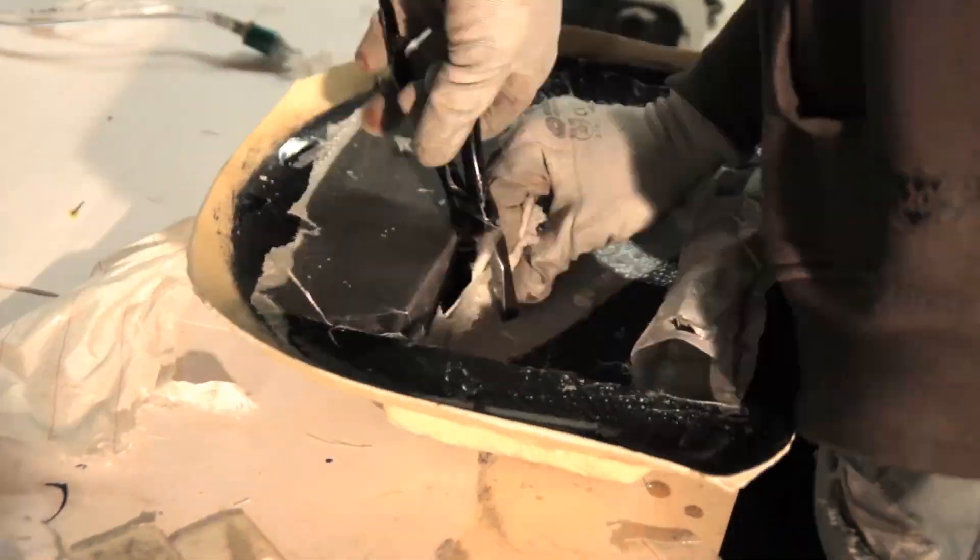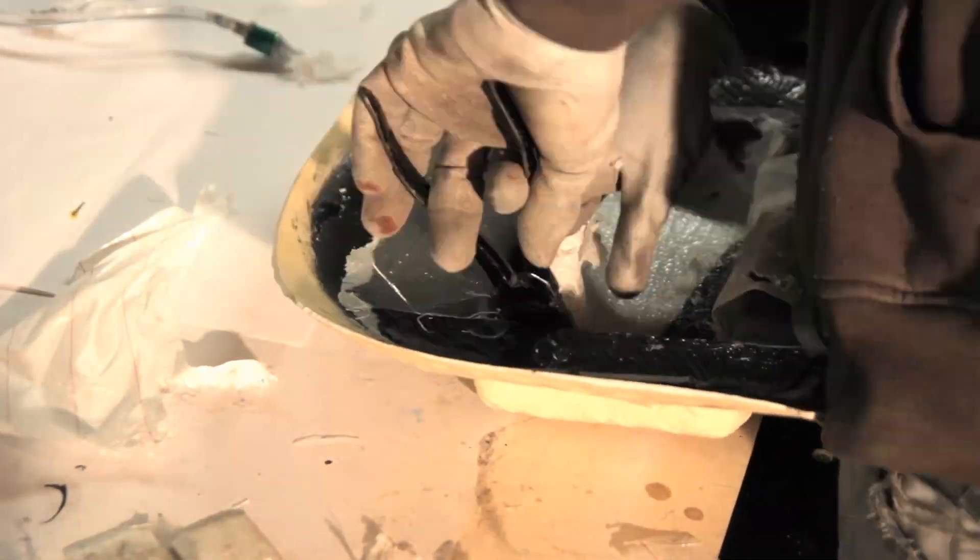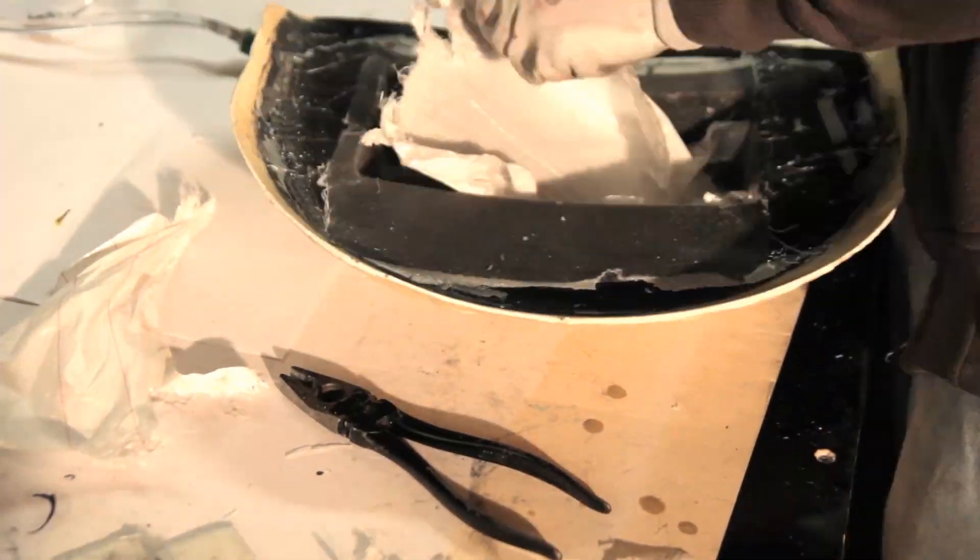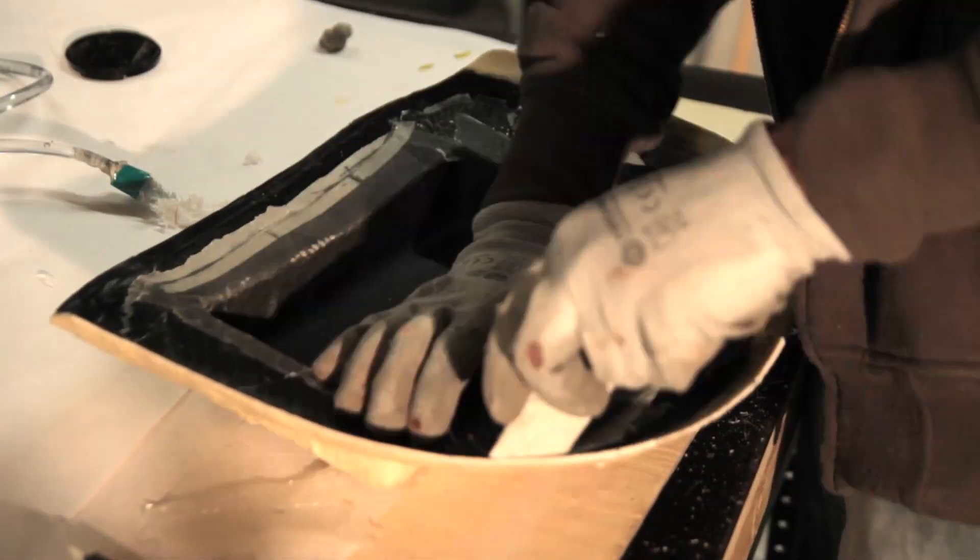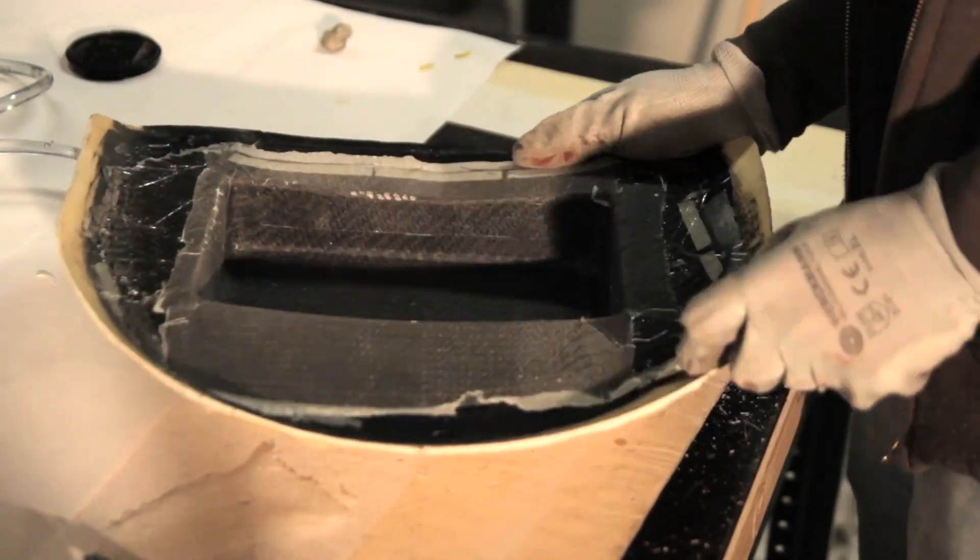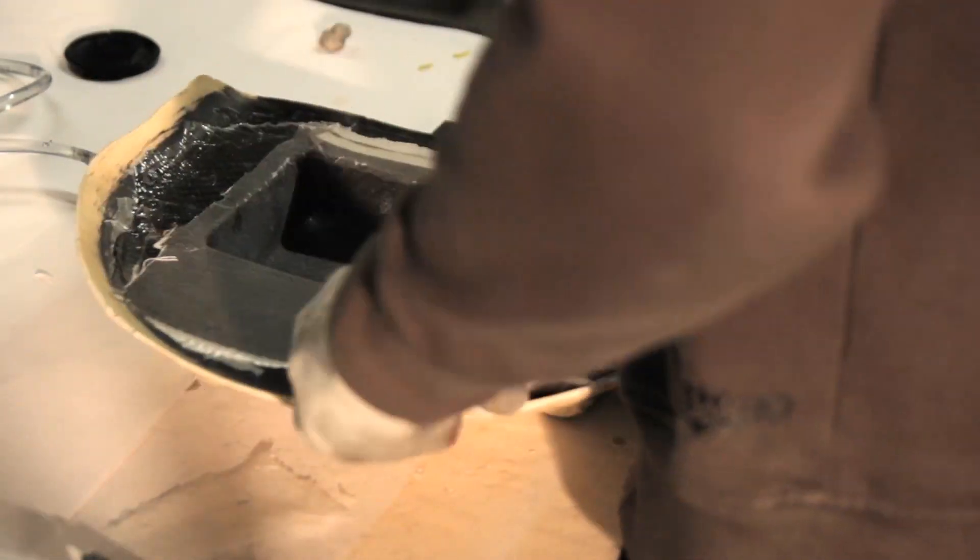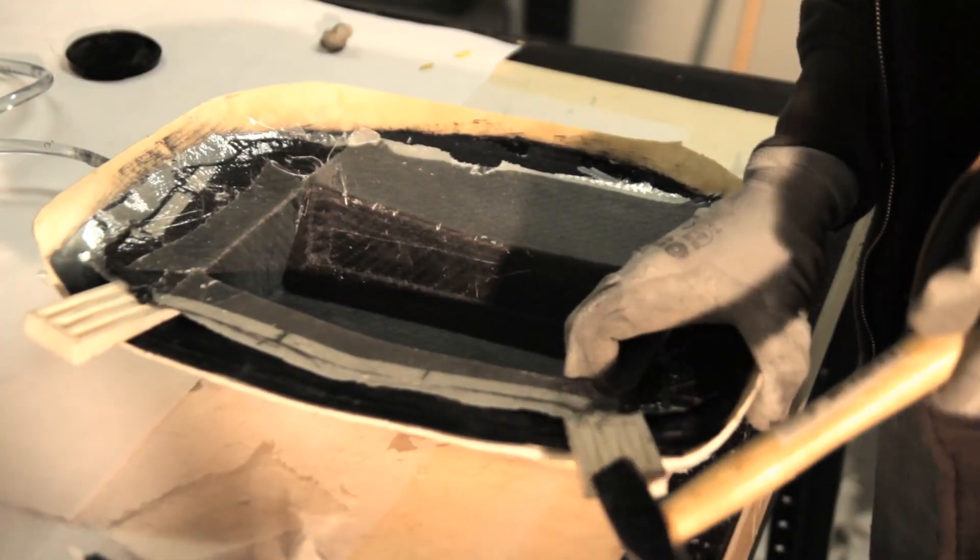I'm removing the peel ply here and I have to say, to be honest, it's always a mess to get peel ply out in tight corners and so on. What I'm doing here is I'm using a wedge just to remove it and I just pry this out.